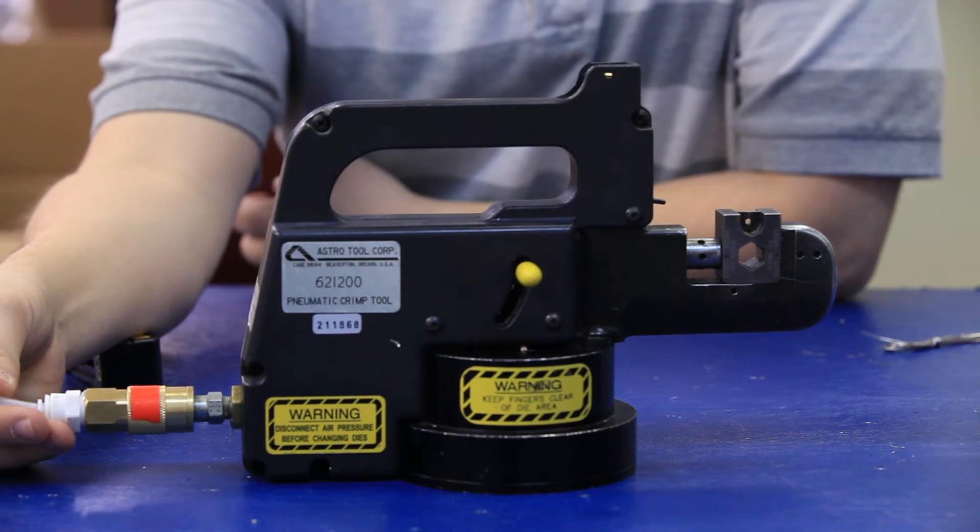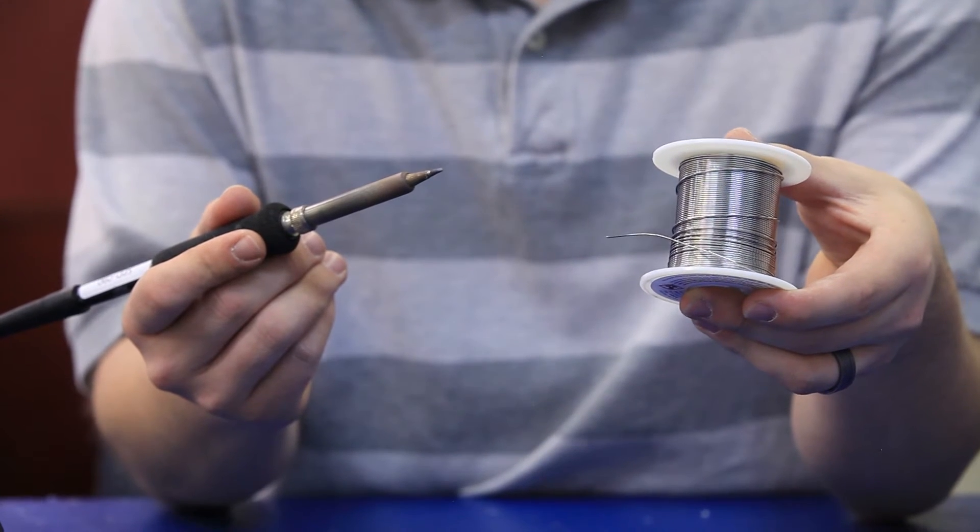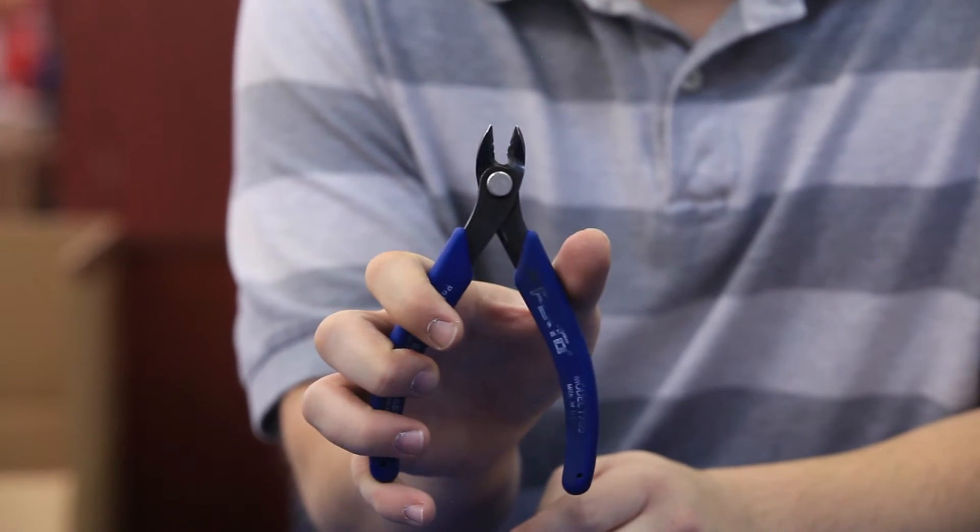You'll need a stripping tool, a crimping tool, a soldering iron and solder to get the job done right. Some dykes or a cutting tool are also handy tools to have around for the job.